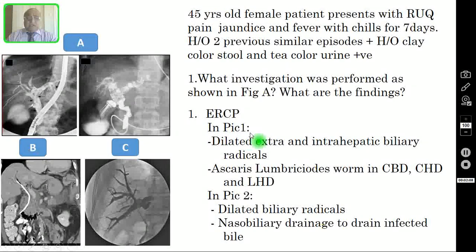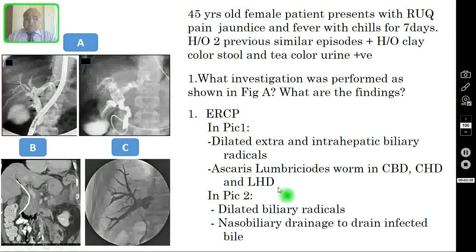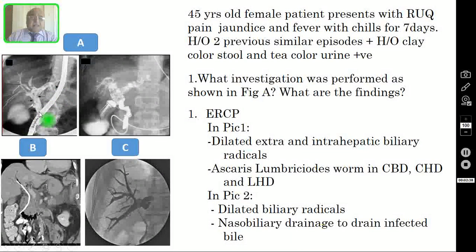In picture A, you are seeing dilated extra- and intra-hepatic biliary radicals. You are seeing a shadow of Ascaris lumbricoides worm in the CBD, that is the common bile duct, common hepatic duct, and in the left hepatic duct. The arrows are showing this shadow of Ascaris lumbricoides worm visible inside the biliary radicals.